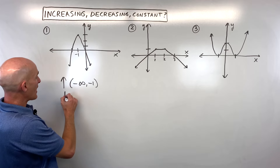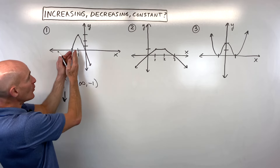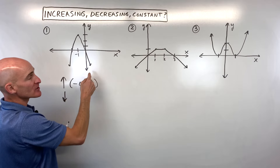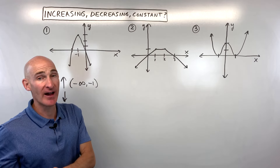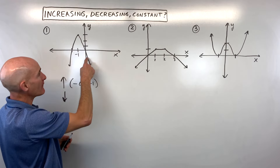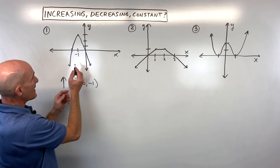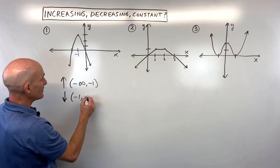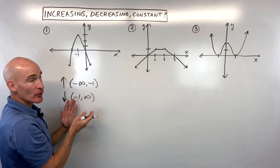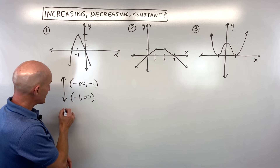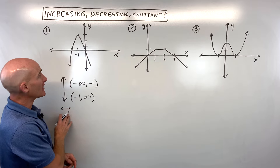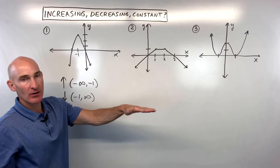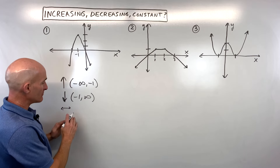Now where is the graph decreasing? Again, reading from left to right, the graph is going down. So for what x values are the y values decreasing? That's going to be from negative one to positive infinity, again using an open interval. And where is the graph constant? There's really nowhere on this graph where it's going horizontal, so we'll just say none for that.